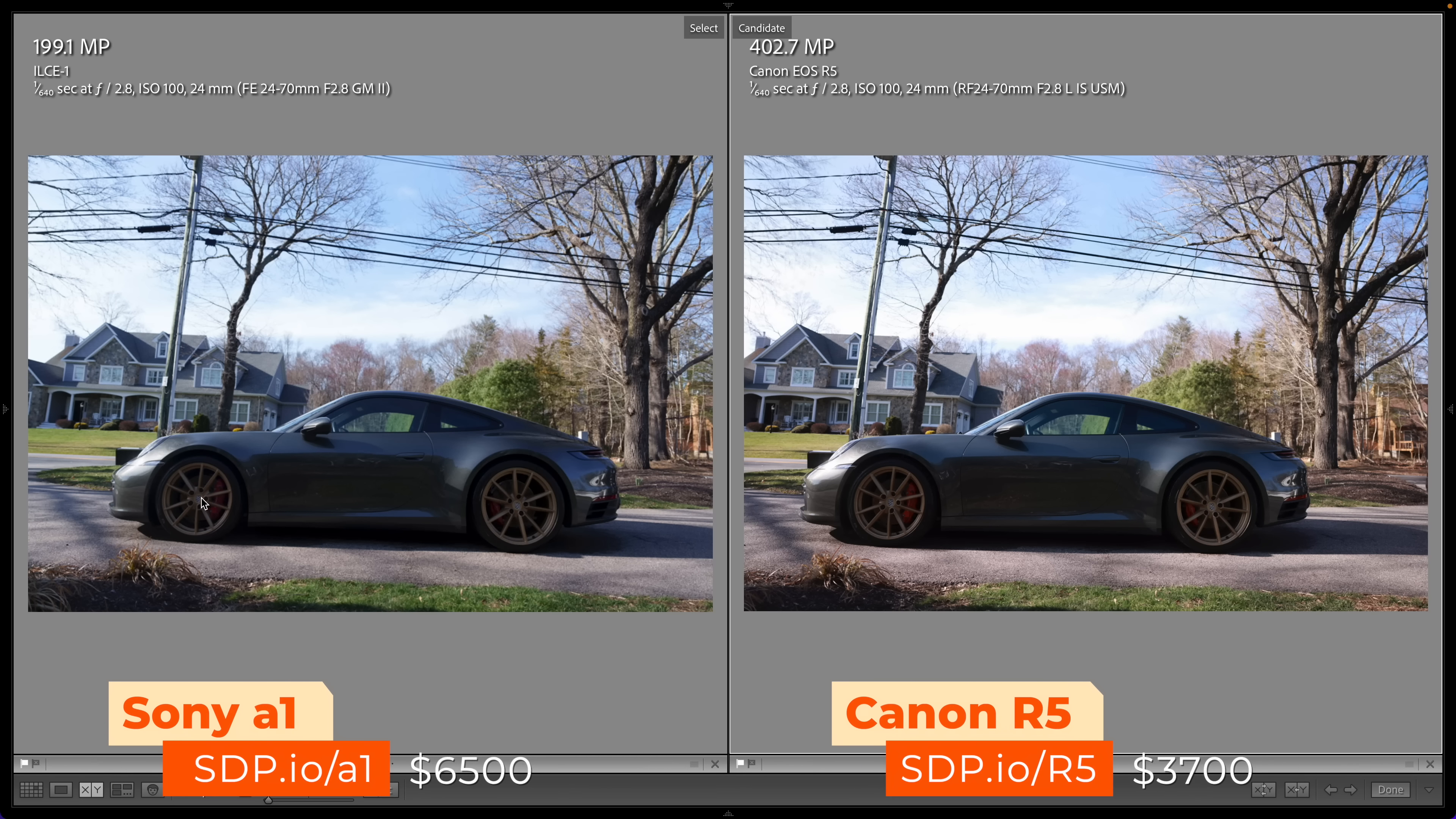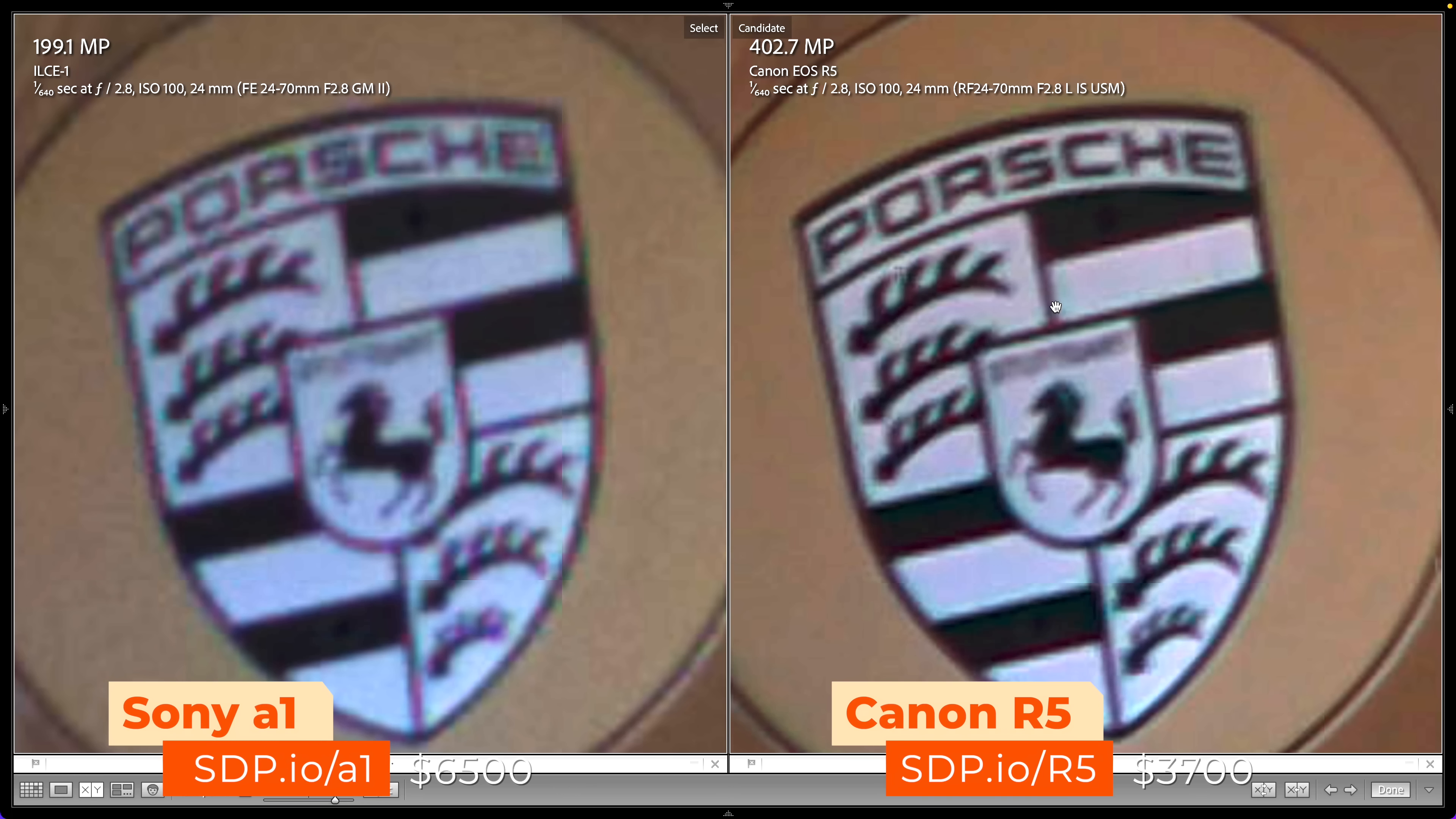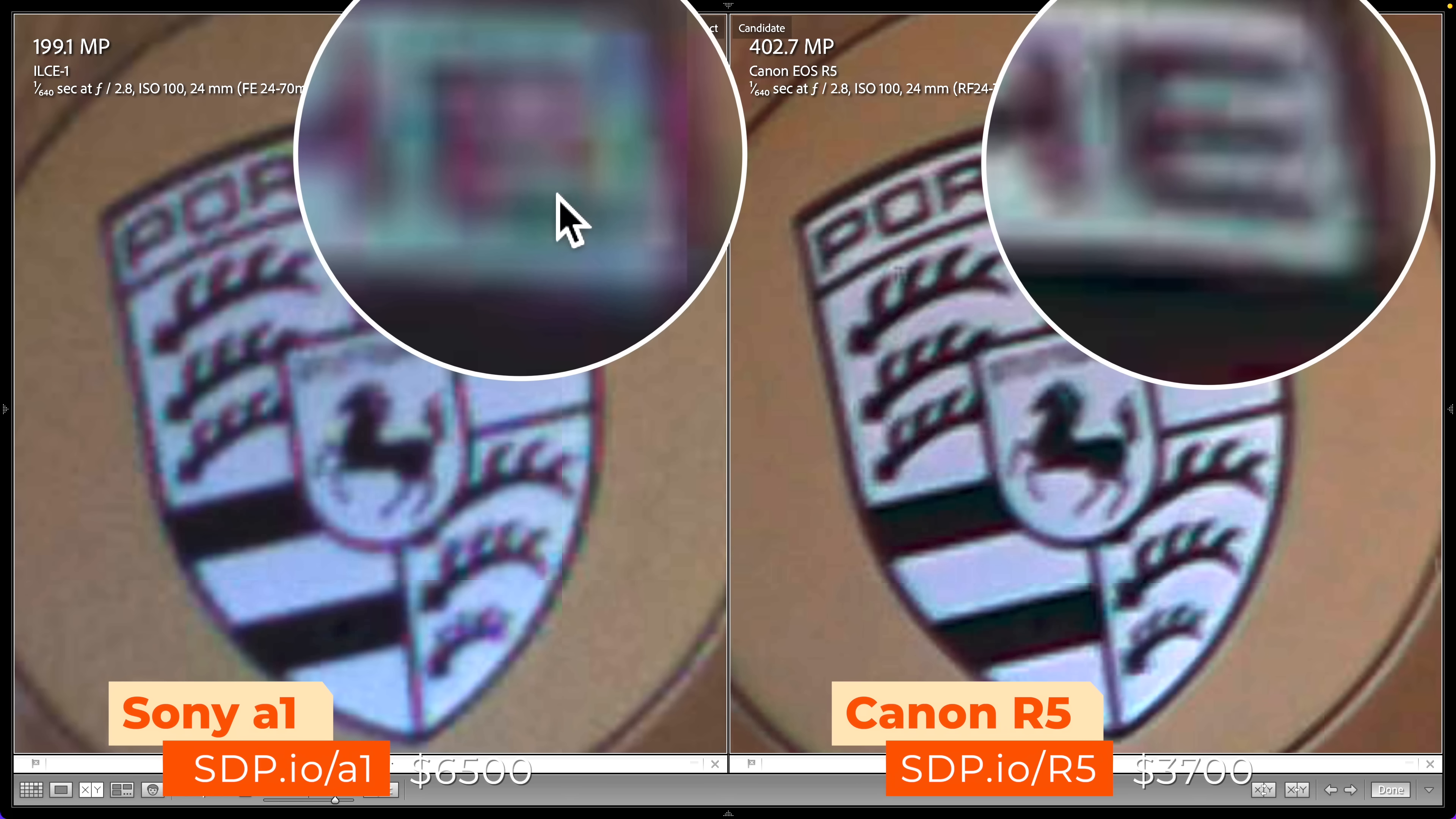So in this real-world scenario and every real-world scenario I've used pixel shift in I end up with the detail from only a single image. Same tripod, same setting, same scene. Wow the Canon wins by a mile. It is so much more detailed. If you look at the letter E here it's all smushy on the Sony. Why is this?